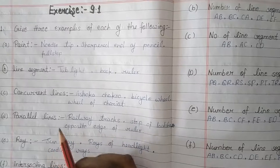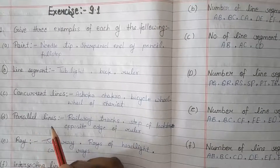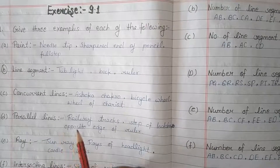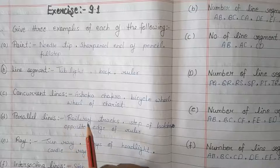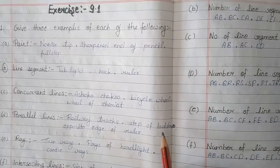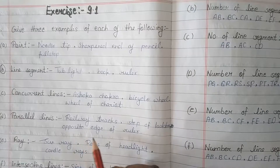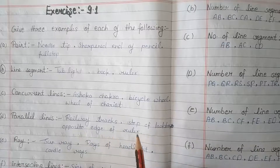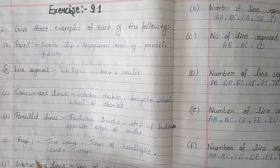D - Parallel lines. First example: railway tracks. Second: step-up ladders. Third: opposite side edges of a ruler.